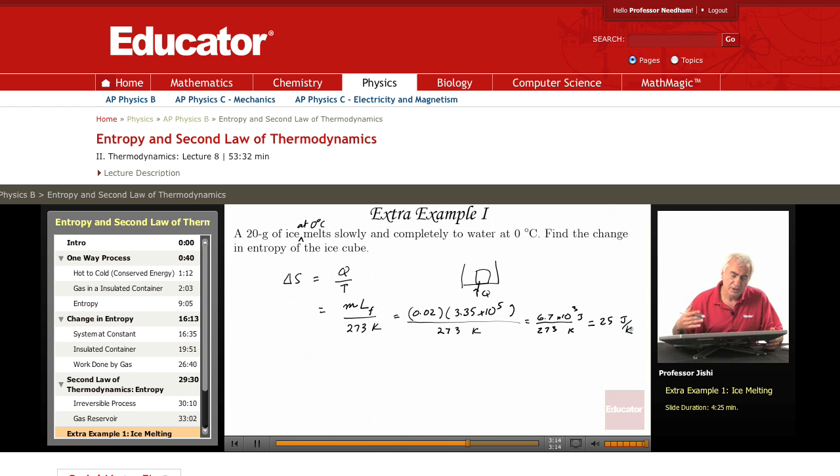The entropy of the ice in going to water increases, which makes sense, because entropy is a measure of the disorder. The more disordered the system is, the higher the entropy.